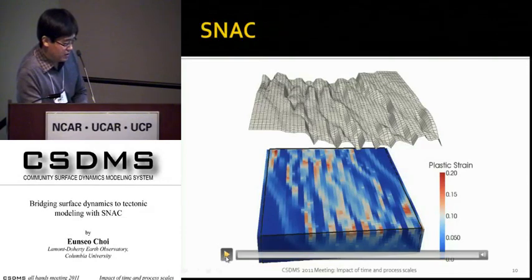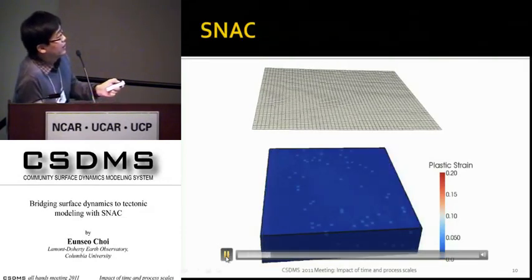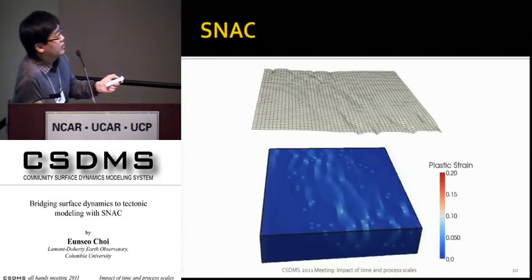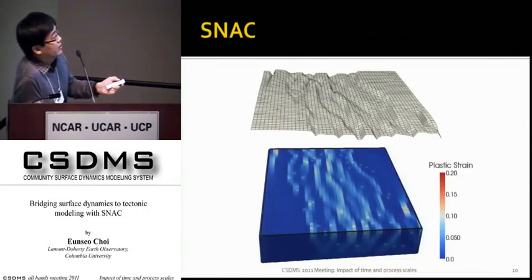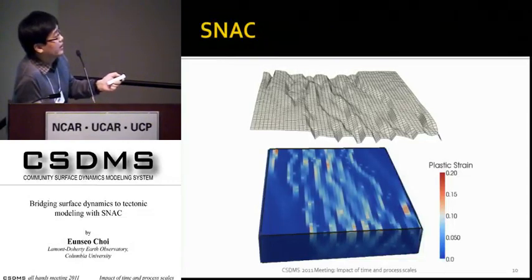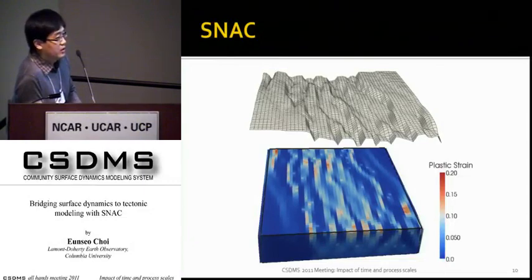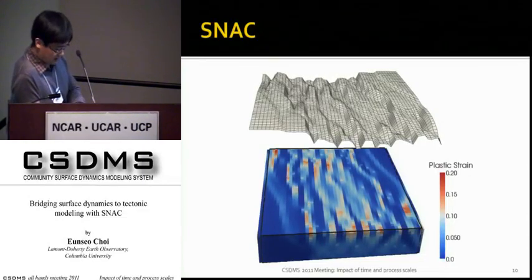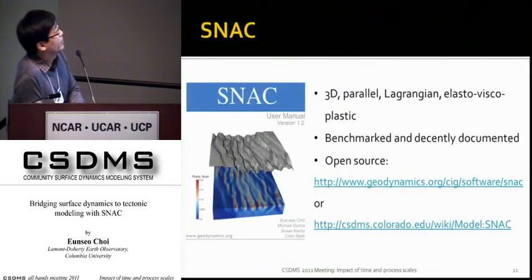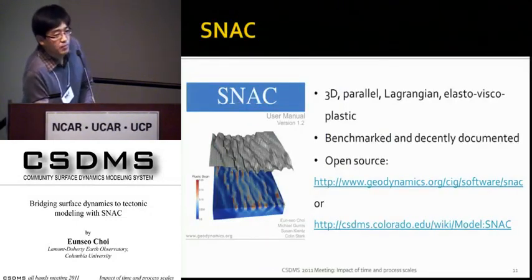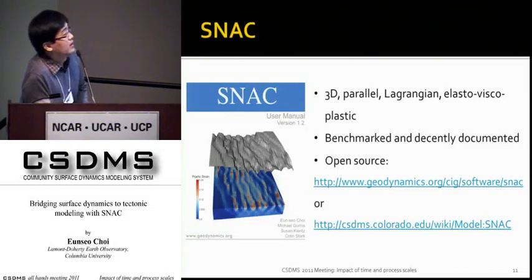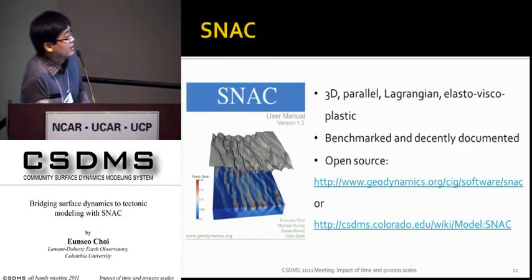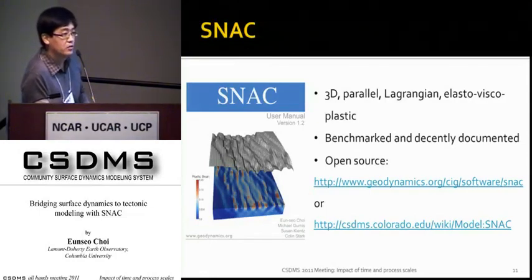Let me run the animation again. Individual faults are oriented mostly perpendicular to the extension direction, but the interconnected structures follow the predefined rifting zone — pretty much consistent with the sandbox model. In summary, SNAC is a 3D parallel Lagrangian code for elastoviscoplastic material. It has been benchmarked and is decently documented. It is open source, distributed through the website of the Computational Infrastructure for Geodynamics, and has been linked to the CSDMS website as well.